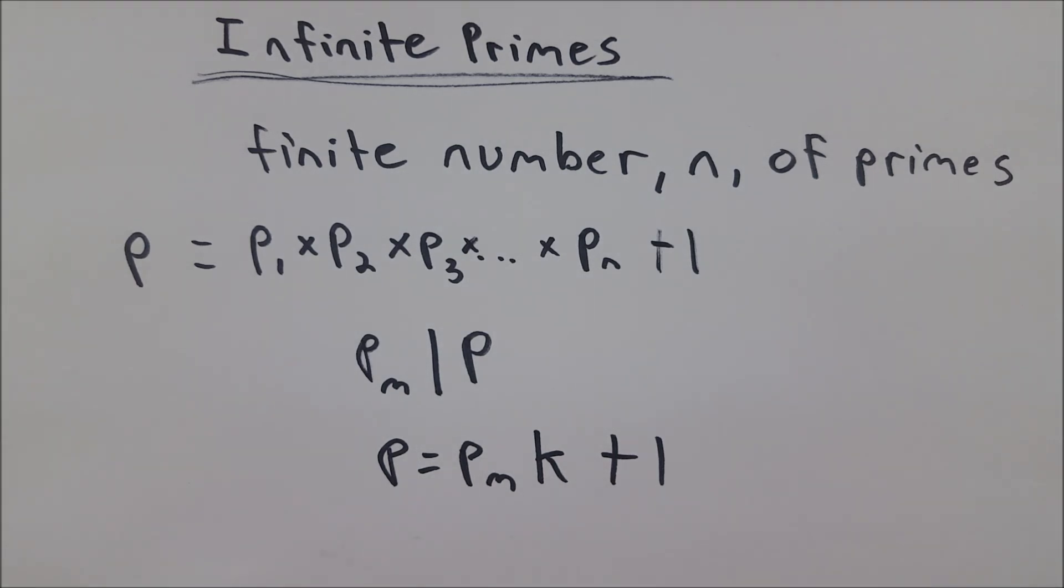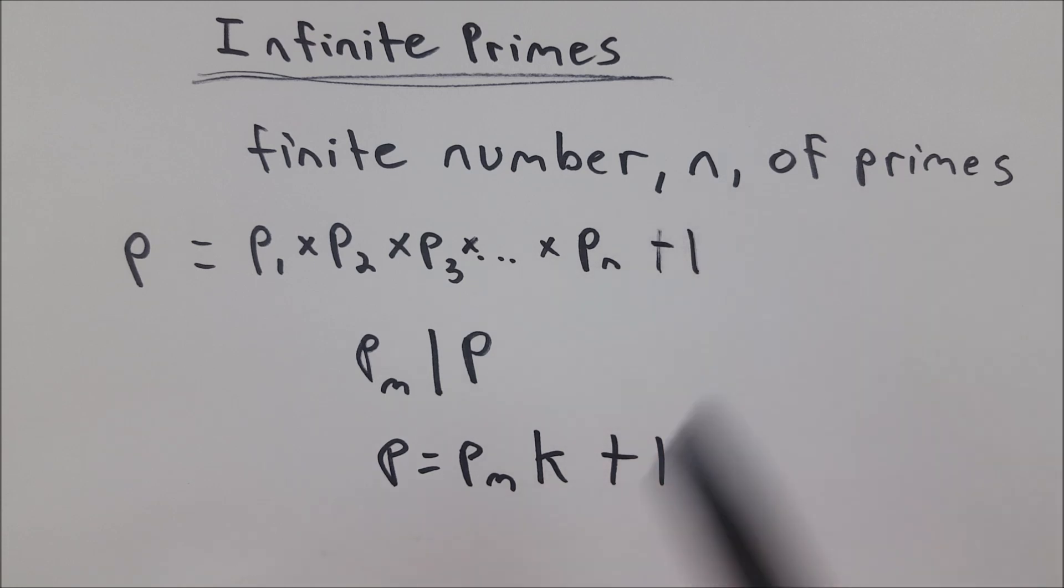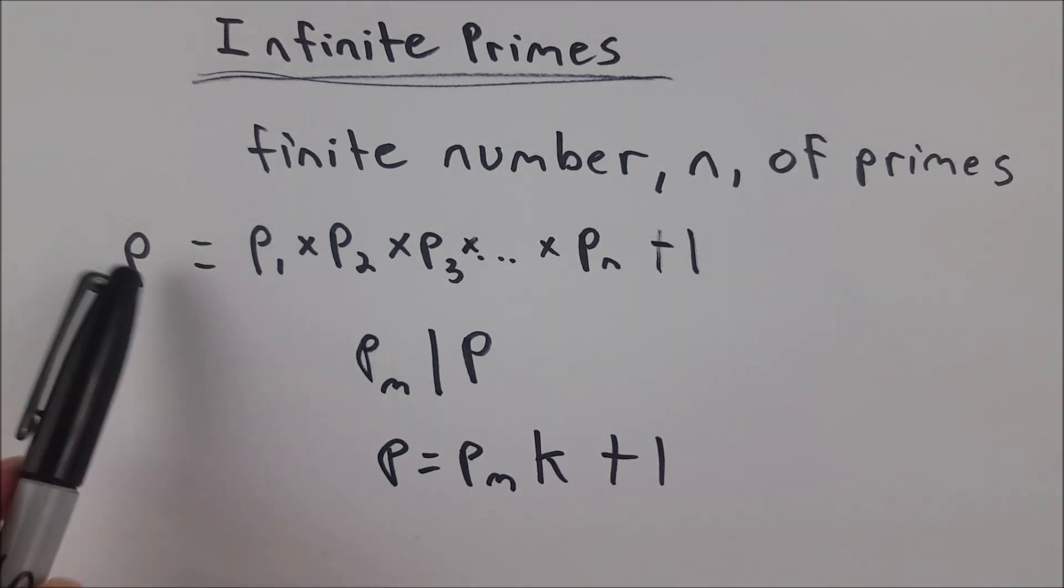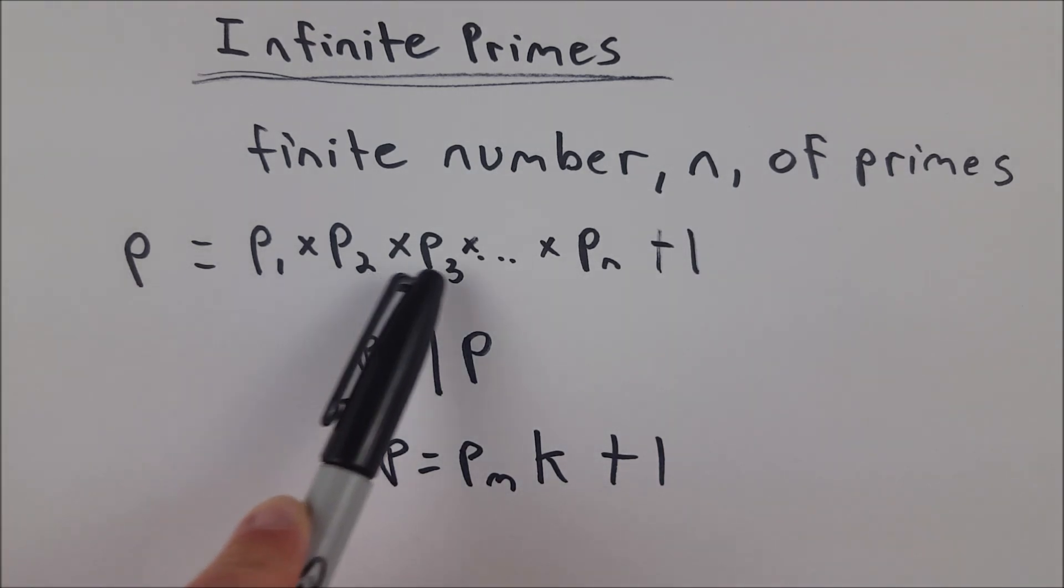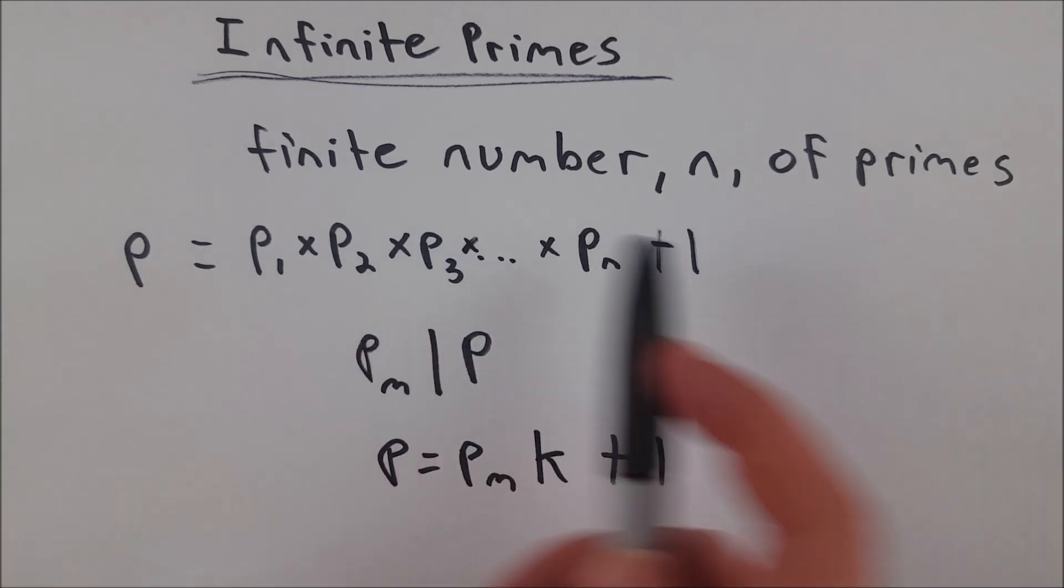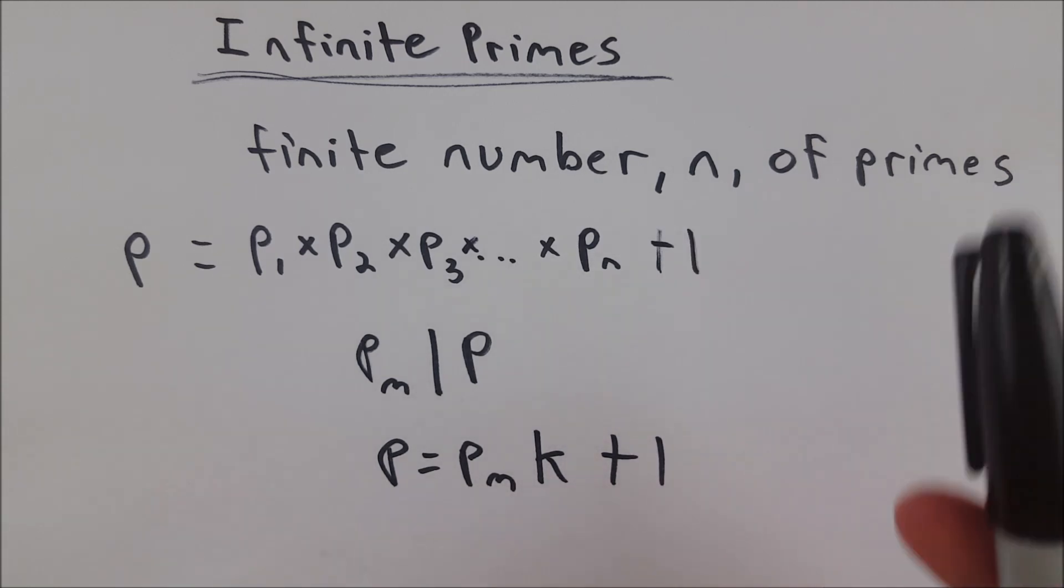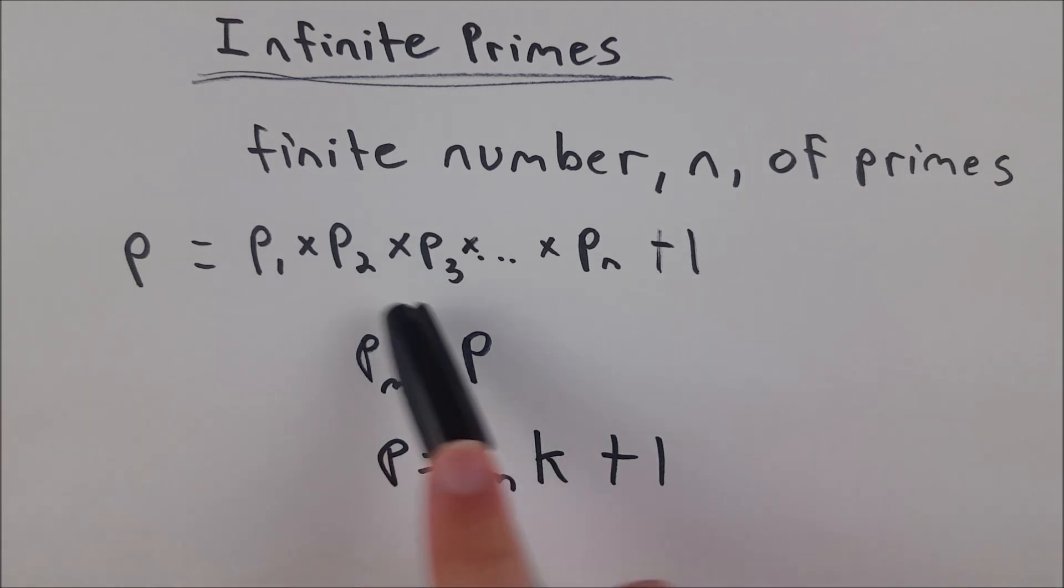So just to walk you through that one more time, we suppose for the sake of contradiction, there's a finite number n of primes. We let some number P be the product of all n primes plus 1. Then we know that P is bigger than all of our prime numbers, because it's the product of all of them, with an additional 1 added to boot. So we know it's bigger than all of them. Therefore, by the fundamental theorem of arithmetic, which says that every number either is prime or can be uniquely factored into primes, we know that at least one of our prime numbers has to divide P.